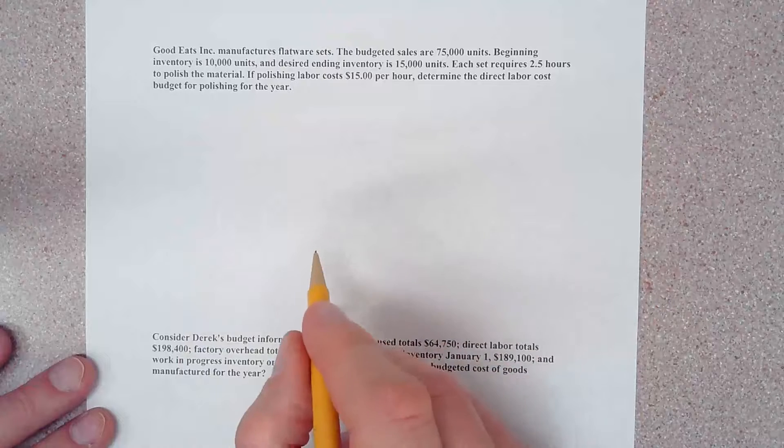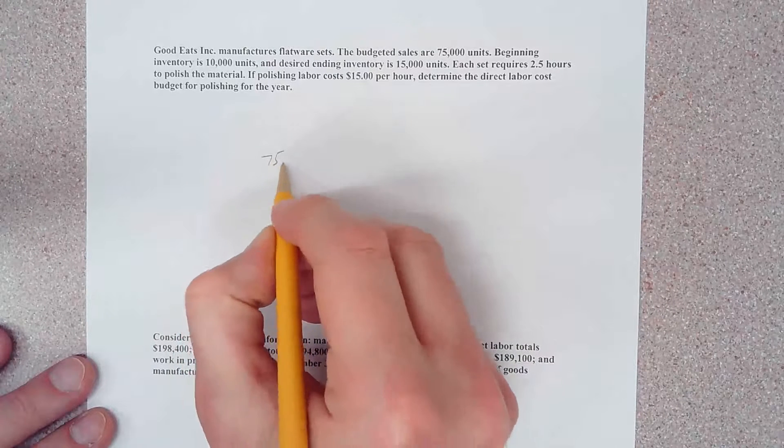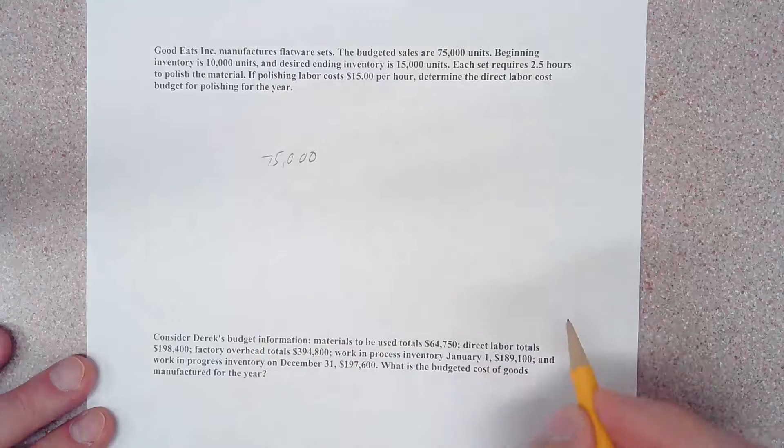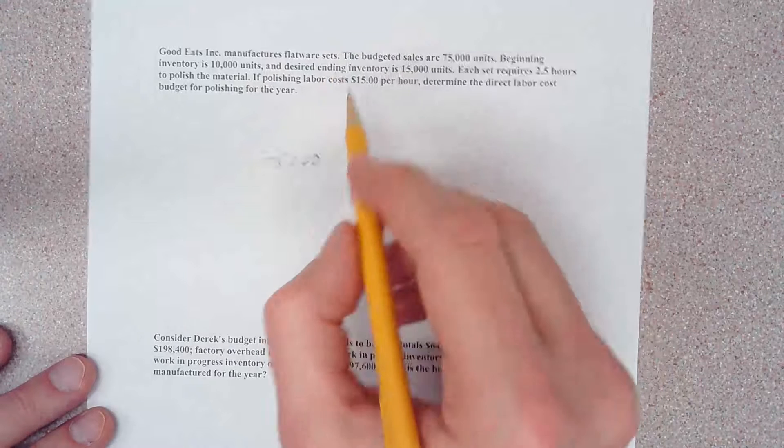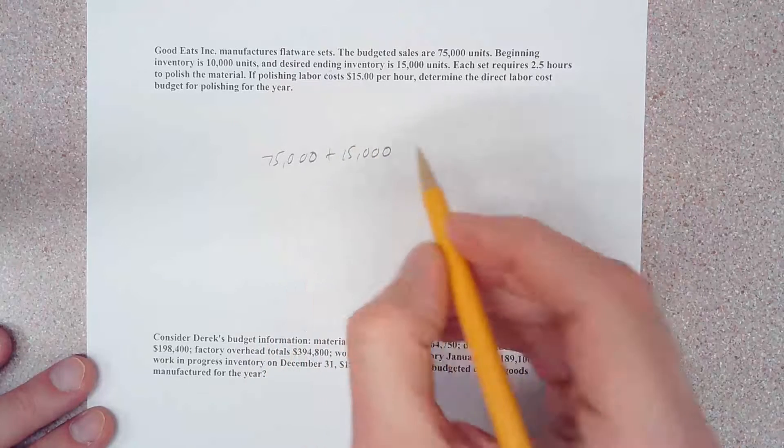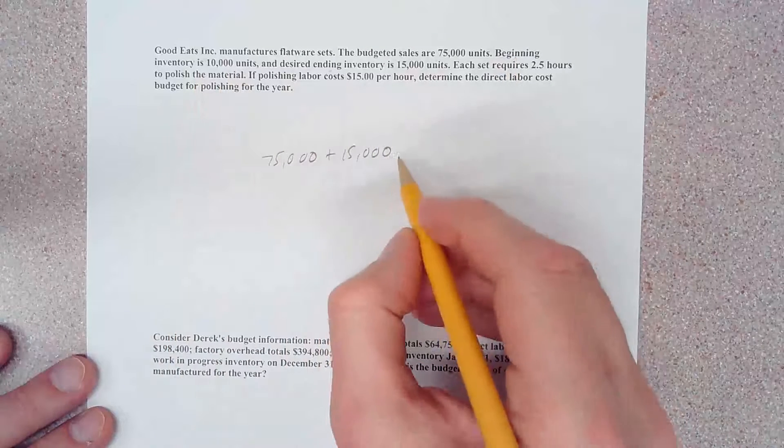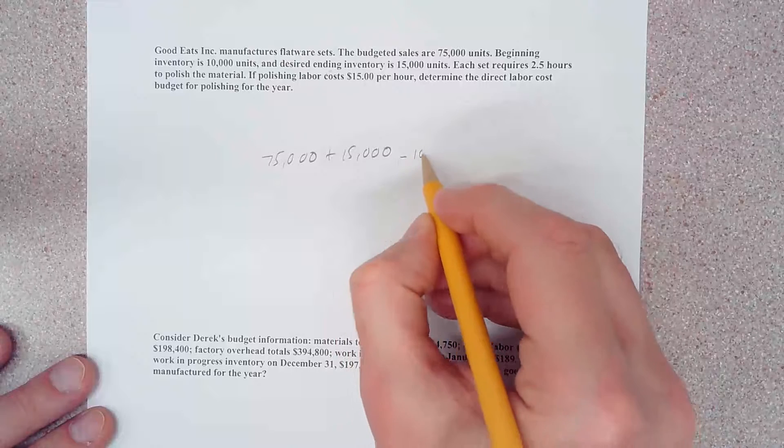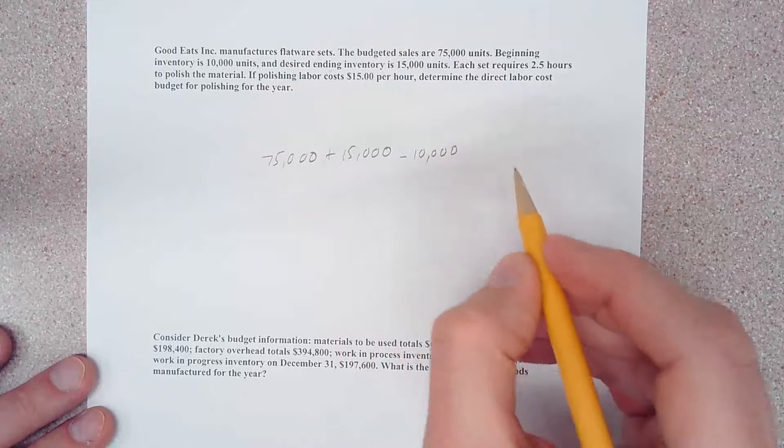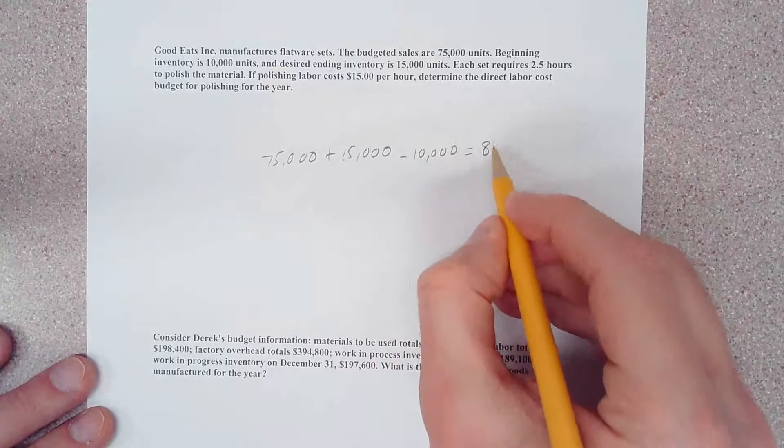We're going to start off as always with budgeted sales of 75,000. We're going to add to that our desired ending inventory and we're going to subtract out our beginning inventory because we don't have to make that, we've already done it. If we do that, we're going to end up making 80,000 units for the period.